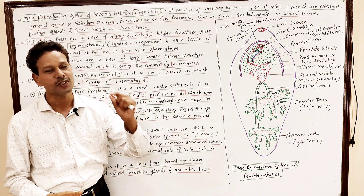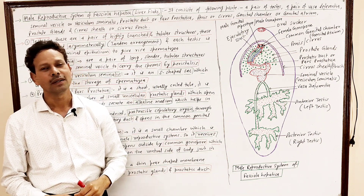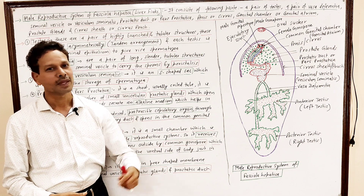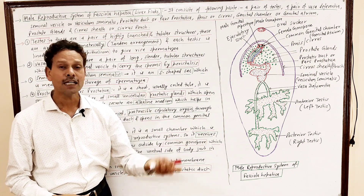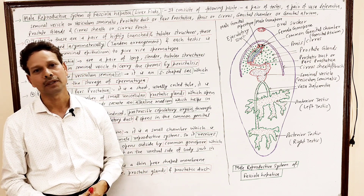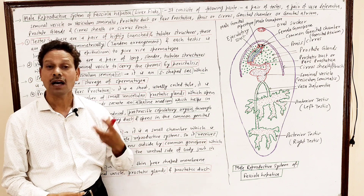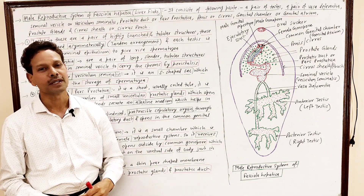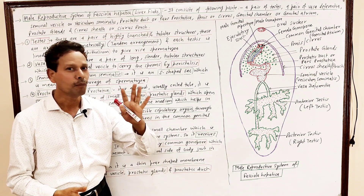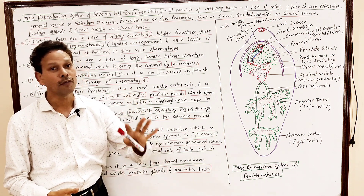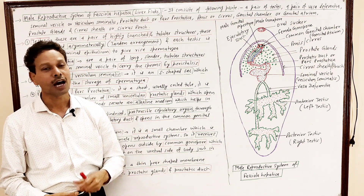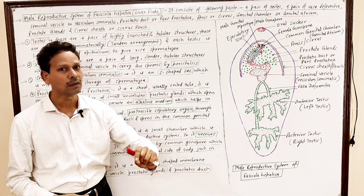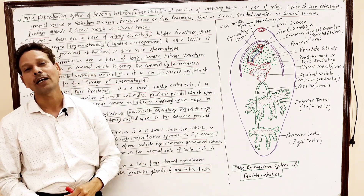In today's lecture, we will cover the male reproductive system. As we know, Fasciola hepatica, the liver fluke, is hermaphrodite — it is bisexual, it is monoecious. It means both male and female reproductive systems are united. Today we will cover the male reproductive system.